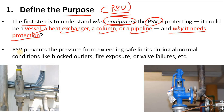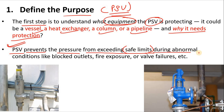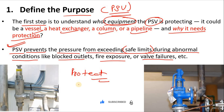The role of the PSV — pressure safety valve or relief valve — is to prevent the system from over-pressurization. It protects your vessel, heat exchanger, pump, column, etc. The PSV prevents pressure from exceeding the safe limit during abnormal conditions. Abnormal conditions could be blocked outlet, fire exposure, or valve failures, which we will discuss in further slides.